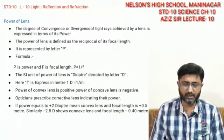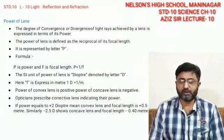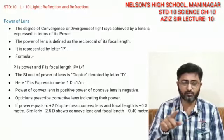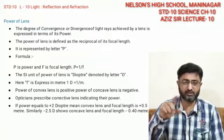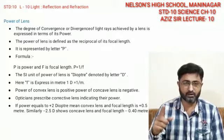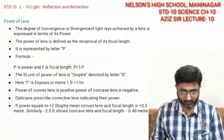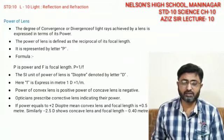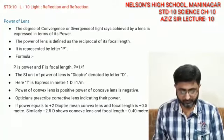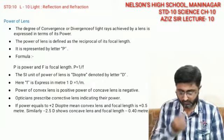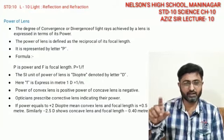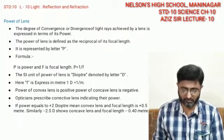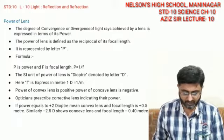We won't make it complicated in terms of mathematics. Power of lens is nothing but the inverse of focal length. The formula is P = 1/F, where P is power of lens and F is the focal length. The unit is termed as dioptre and the symbol is capital D. So 1 dioptre equals 1 divided by 1 meter — this is how we express focal length.